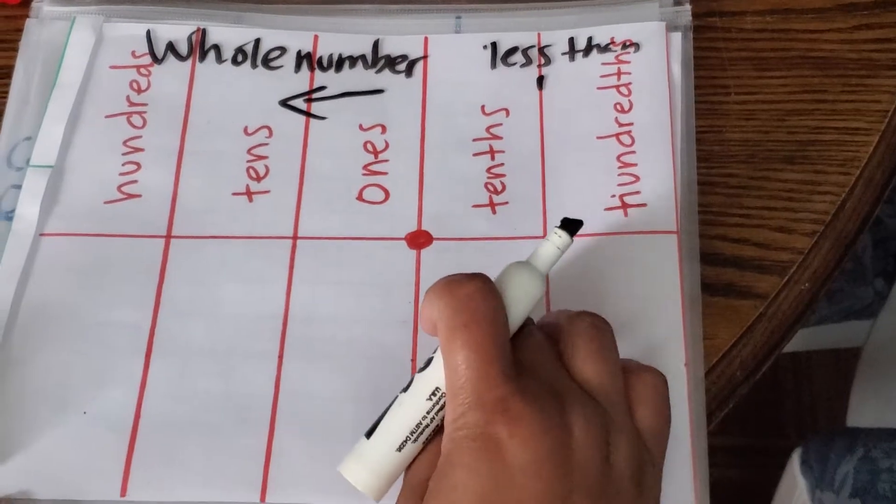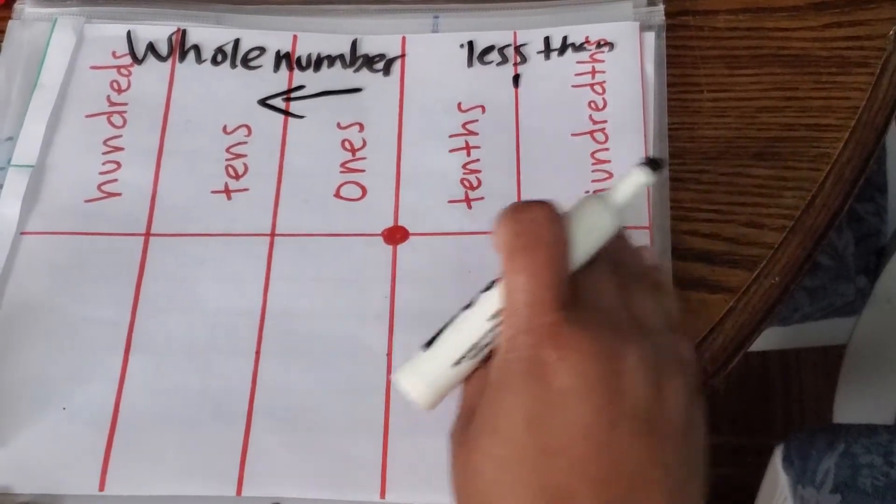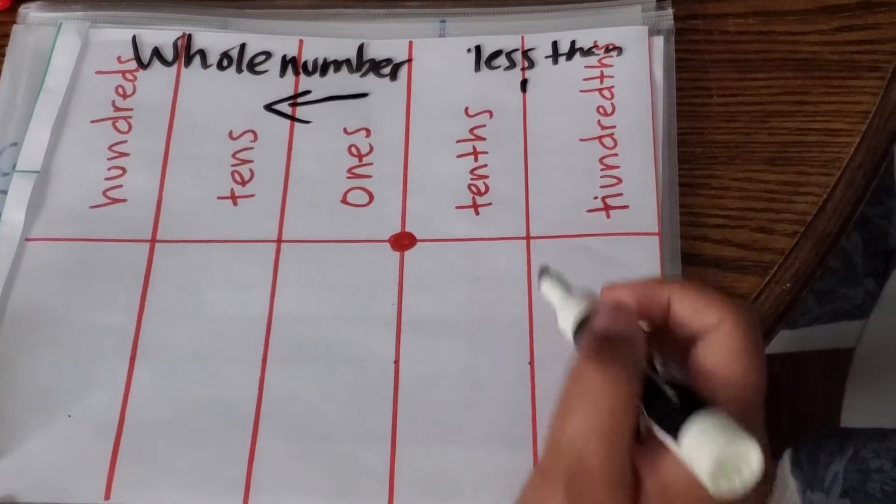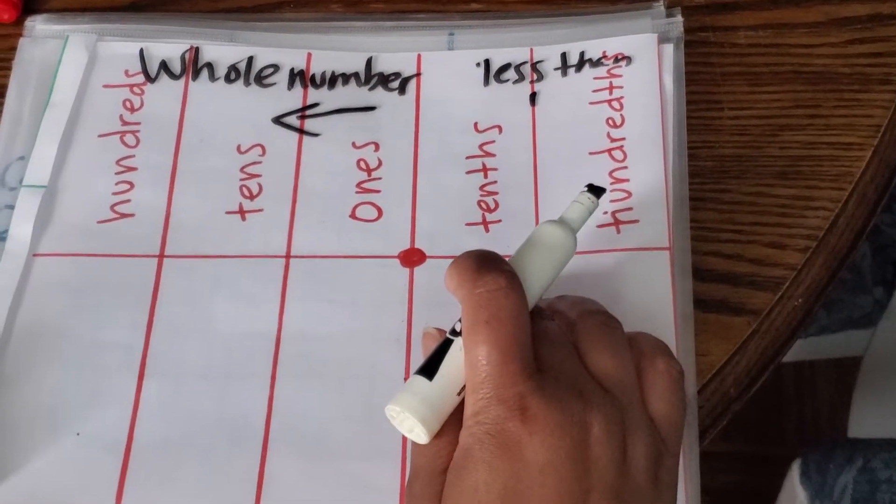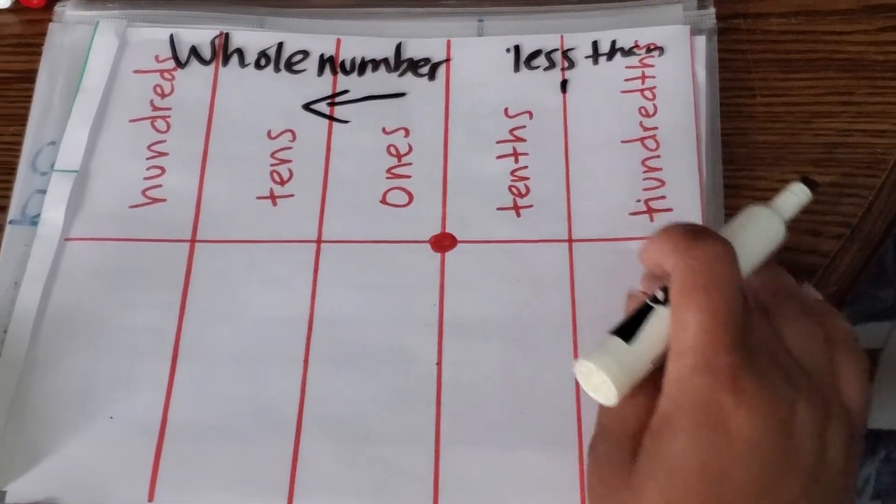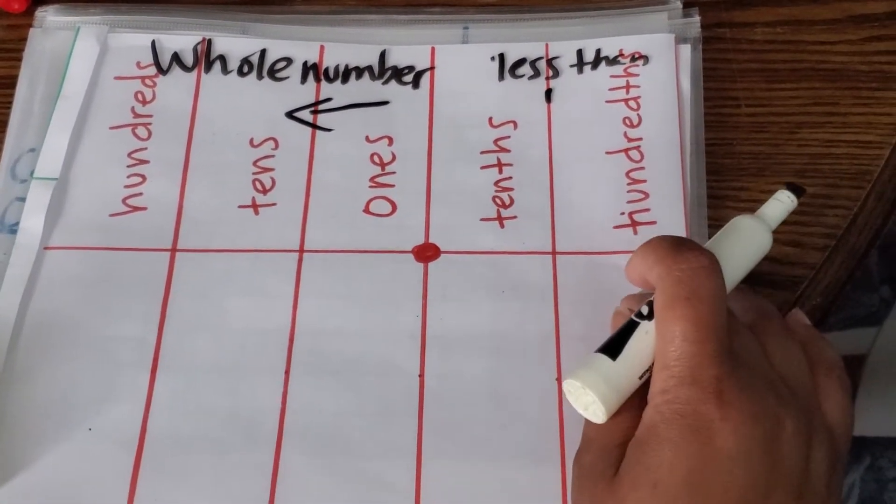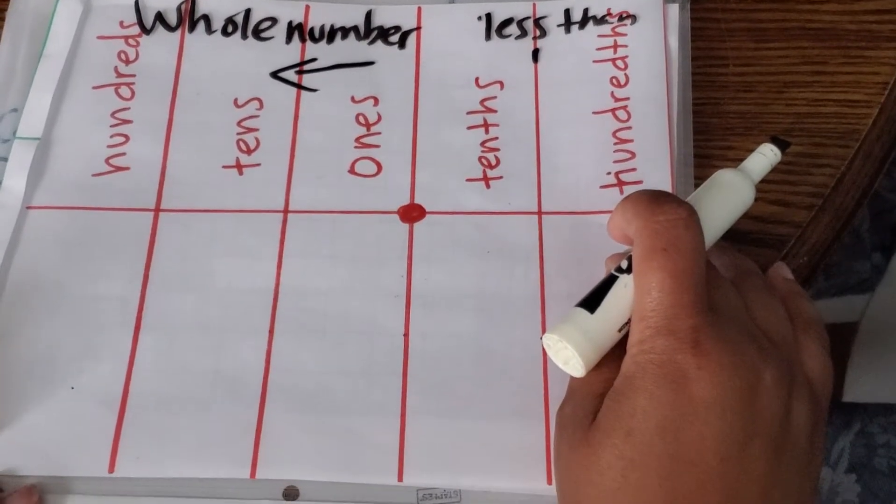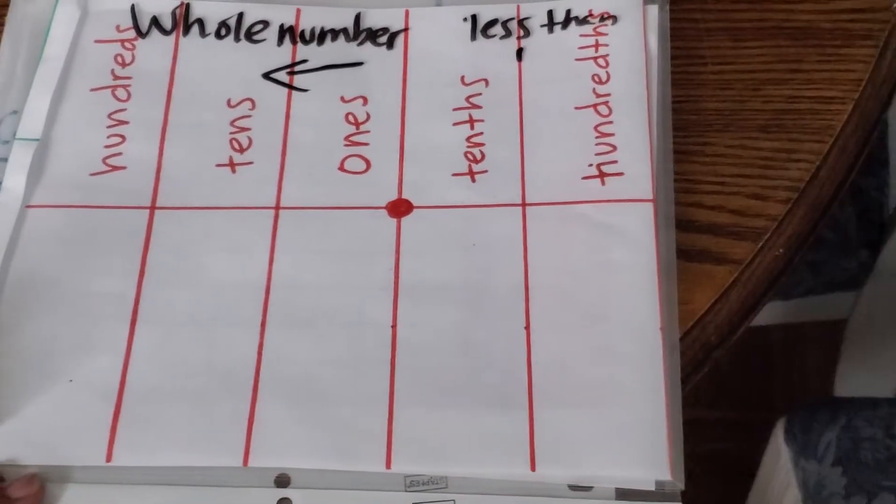For fractions and decimals, the numbers get smaller as you go to the right. You start with tenths, which we know are dimes. Hundredths, which we know are like the same value as pennies.